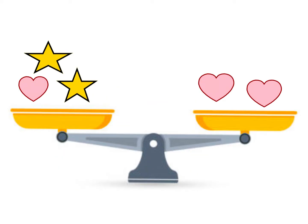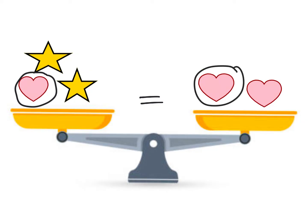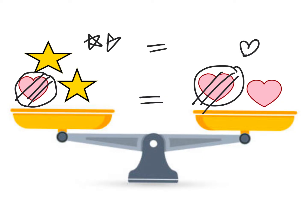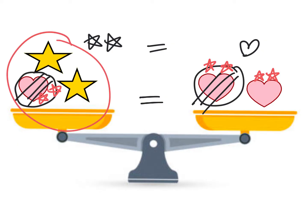Let's try one out. I have a scale and I'm telling you both sides are equal. Can you figure out the relationship between the hearts and the stars? Both sides have a heart, so those weigh the same — I don't need to look at those. What I can figure out is that a heart is equal to two stars. I can test that: replacing each heart with two stars gives four stars on each side. So the scale is balanced.